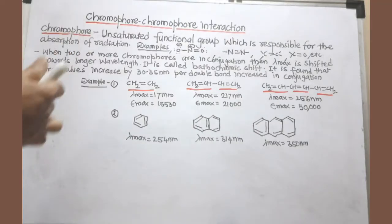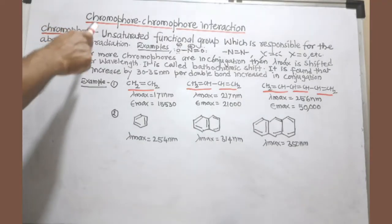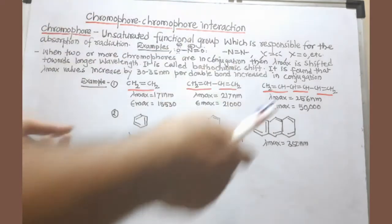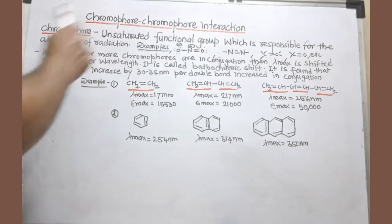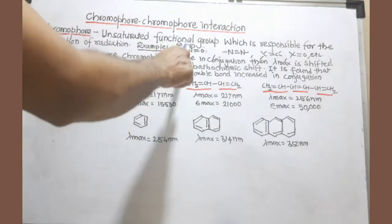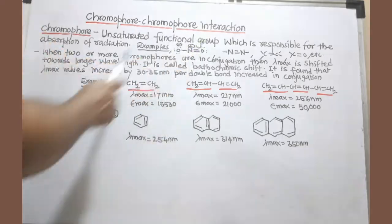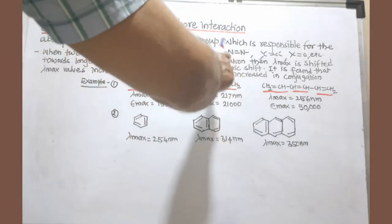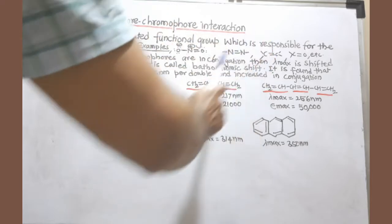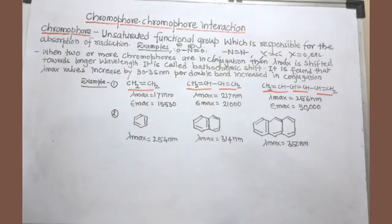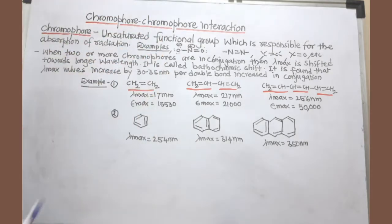Chromophore-chromophore interaction — first, understand the meaning of chromophore. A chromophore is a functional group where a double bond is present, or an unsaturated functional group. For example, the nitro NO2 group is a chromophore because there is a double bond. Similarly, the ethylenic group, the azo group, and the carbonyl group all contain double bonds, so you can extend that list. Chromophore essentially means unsaturated functional group.